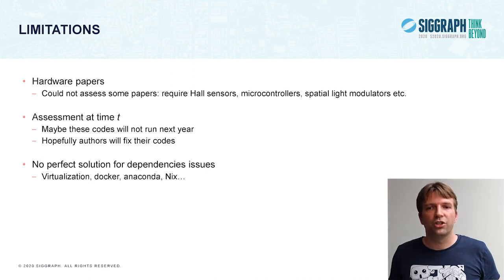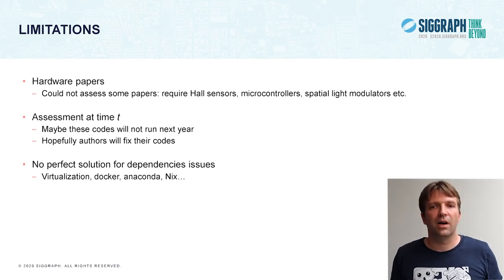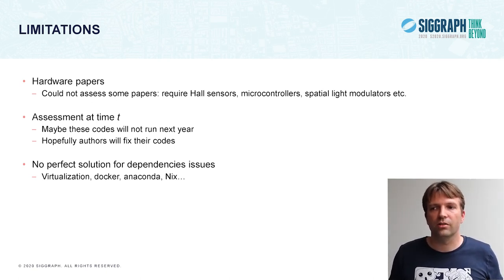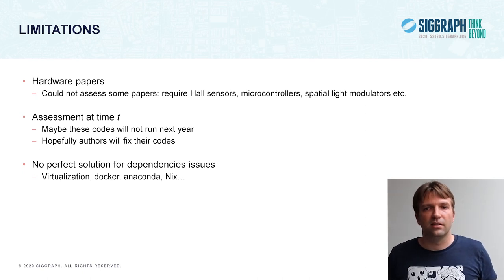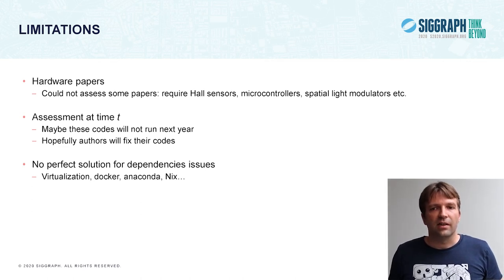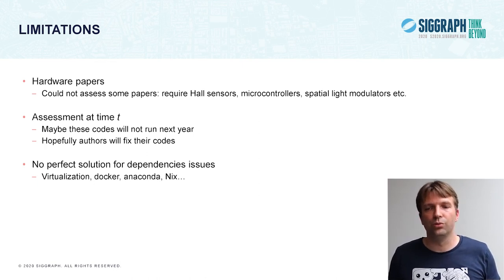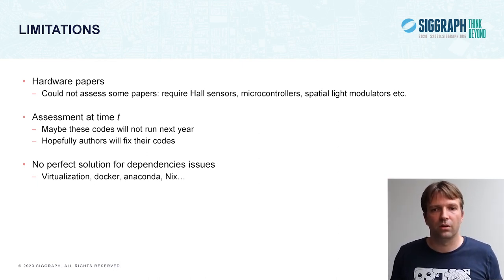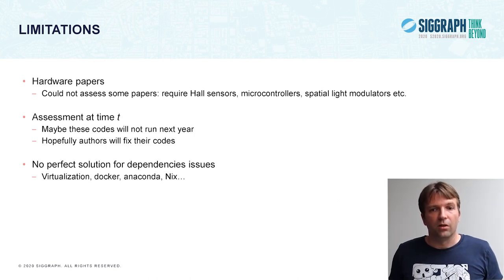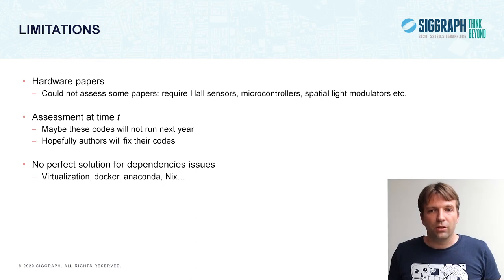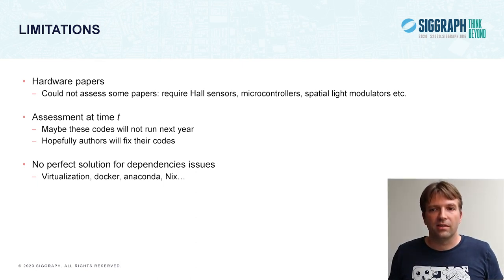A limitation to our approach is that we could not really access some hardware papers, because they require hard sensors, microcontrollers, special light modulators, and so on — devices that we do not have. It's also an assessment at the current time. Maybe the code that we evaluated this year will not run next year due to evolved libraries or hardware. And hopefully, authors or co-authors will fix their code so that it runs next year.